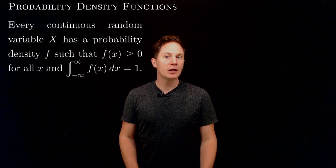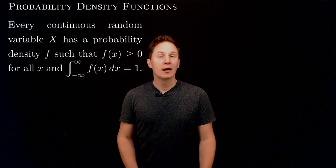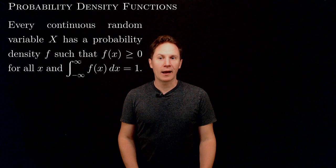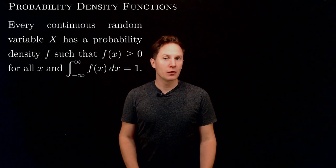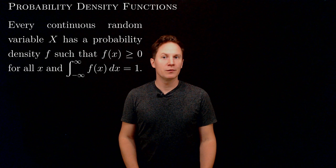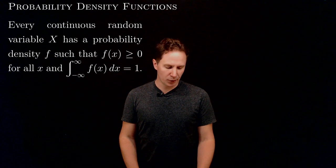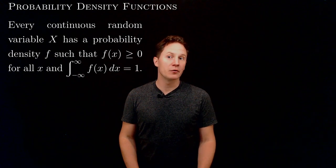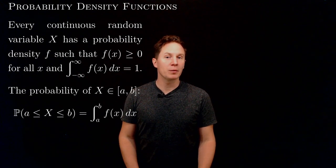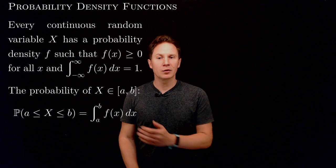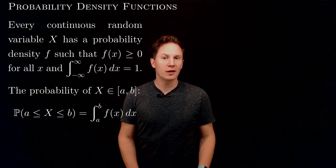Random events with a continuum of outcomes can be described using probability density functions. Every continuous random variable x has a probability density function f, which takes on non-negative values and whose integral from negative infinity to infinity equals 1. One can compute the probability of the random variable having an outcome between a and b via the integral from a to b of f of x dx.